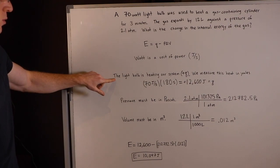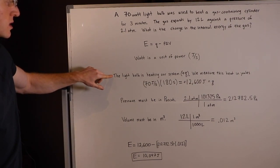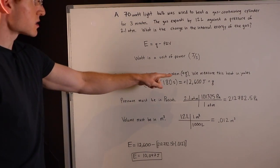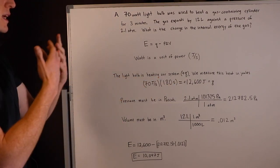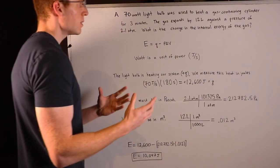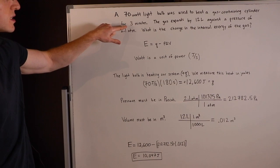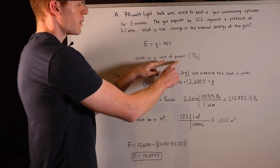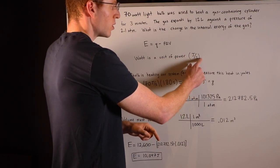So firstly, I want to draw your attention to this light bulb concept. It says the light bulb is heating our system, and that means it's going to have a positive Q, right? We're adding heat into our system, and we measure this heat in joules, but the problem was that all they told us was a 70 watt light bulb was used to heat the container for three minutes. Well, you have to know that a watt is a unit of power, and the units are joules per second, but we just want joules.